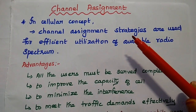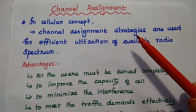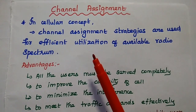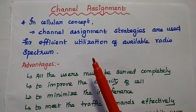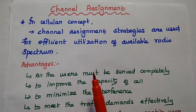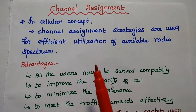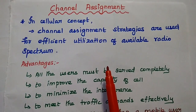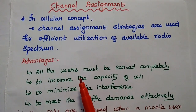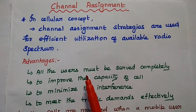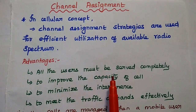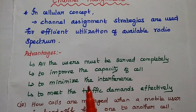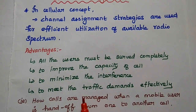Now we are going to discuss channel assignment strategies in wireless mobile communication. Channel assignment is an important cellular concept in mobile communication. It is mainly used for efficient utilization of available radio spectrum, so that all the users within the coverage area must be served completely in order to improve the capacity of the cell and also to minimize the interference.